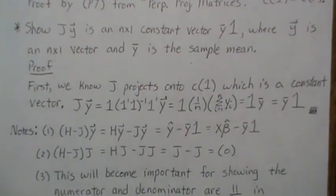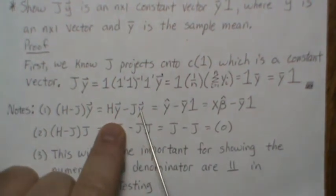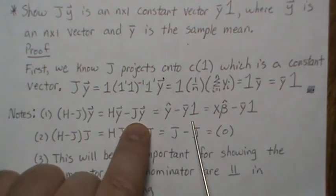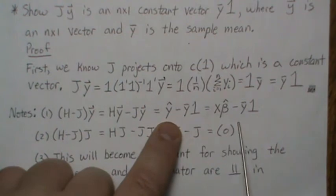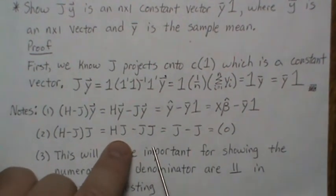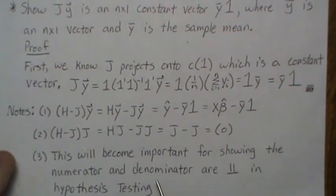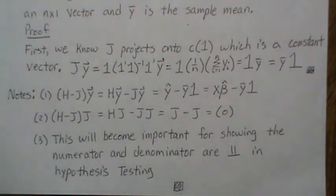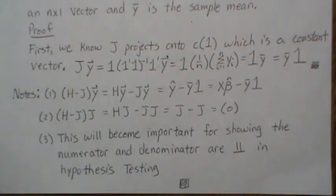This last result — that (H minus J)·J equals zero — will become important in showing that the numerator and denominator are independent when we do hypothesis testing. Well, that's all for today. Hopefully you enjoyed that. Please like the video and subscribe so you don't miss the next one. Thanks, bye.